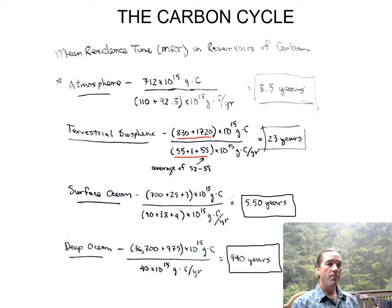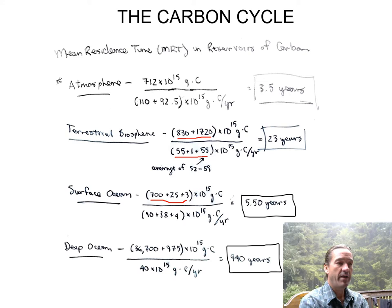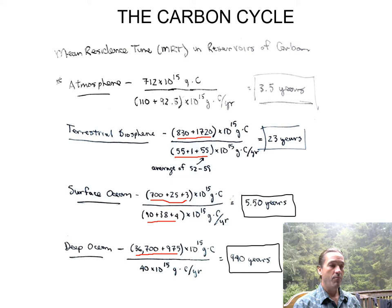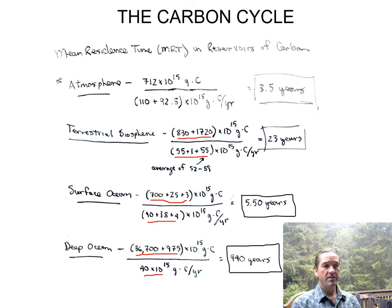Carbon stays in the surface oceans for about five and a half years. Here are the inventories of inorganic and organic carbon, divided by the outward fluxes from the surface ocean. The deep water is a huge reservoir for organic and inorganic carbon. Dividing the deep water inventory by the flux, we get a residence time of 940 years. When carbon reaches the deep ocean, it stays there quite a long time, and that reservoir plays a very important part in the entire cycle.